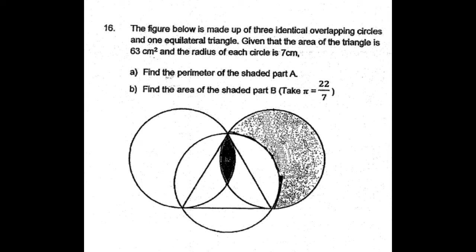This is question number 16. The figure below is made up of three identical overlapping circles and one equilateral triangle. Given that the area of the triangle is 63 cm square and the radius of each circle is 7 cm, part A find the perimeter of the shaded part A, part B find the area of the shaded part B.